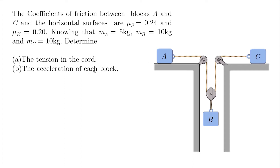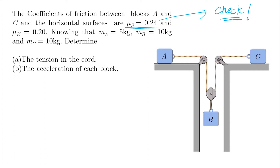Before jumping to conclusions and trying to find the acceleration, you have to actually check that this system will move. Because the problem gives us the static friction — this is a hint and a warning. Whenever you see μs, it means you have to check whether this system is going to move or not.